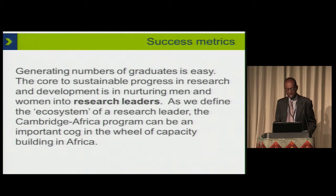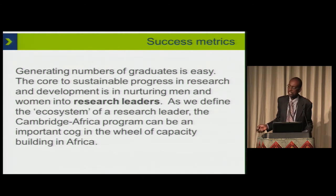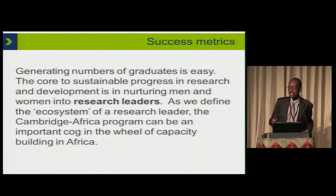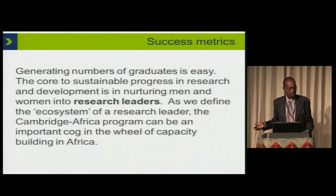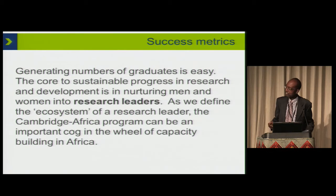Within Thrive and within ICIPE, we recognize that numbers are great but numbers are easy. It's easy to say we've had 300 PhD students over the years. But the real core, I think, is in developing research leaders — because those are the ones who are going to have real impact. Professor Kevin Marsh was referred to earlier today about Africa needing more PhDs. I think we'll only get there when we have enough research leaders who are replicating the investment that has been made in them, without necessarily relying on external funding, but also generating funding within country. The opportunities are there. They may not be huge, but they are not absent. I think the Cambridge Africa program can be part of this process.